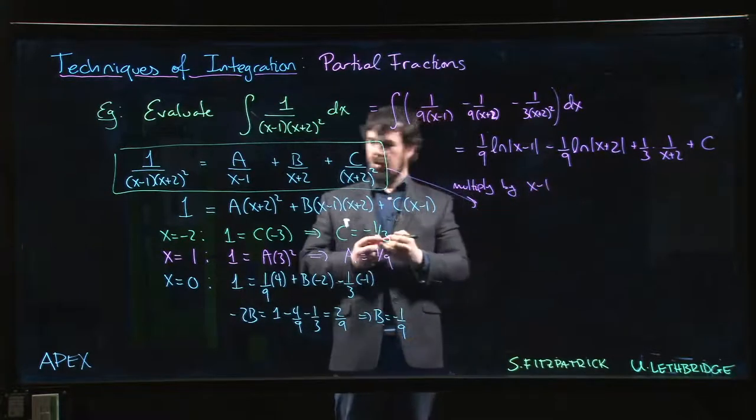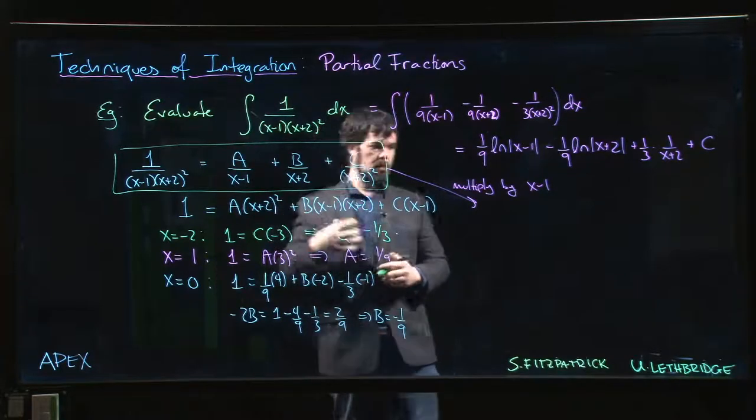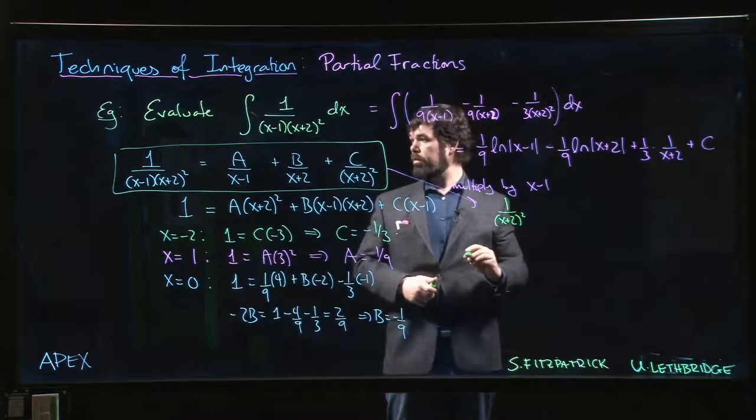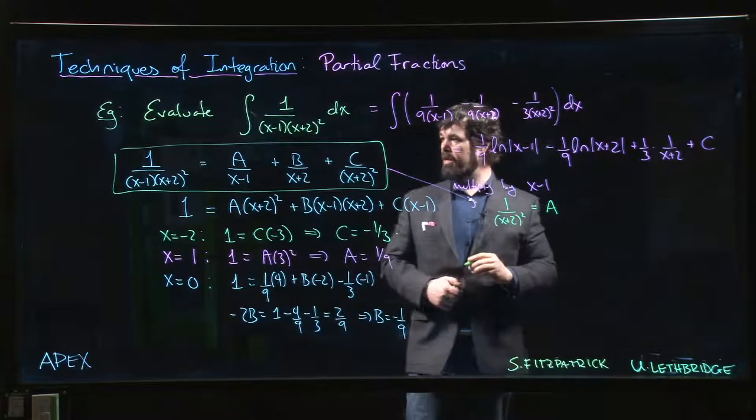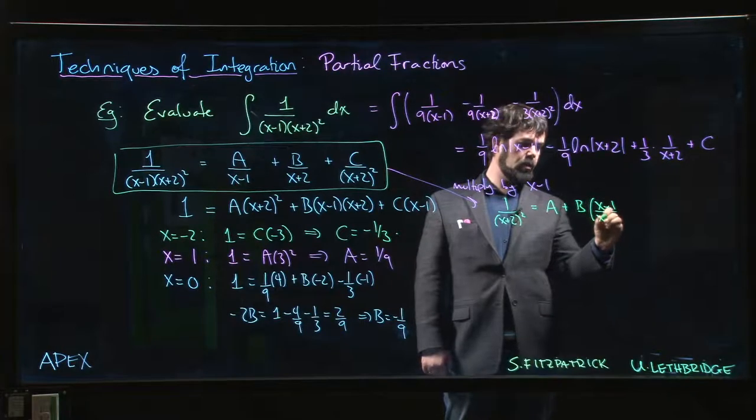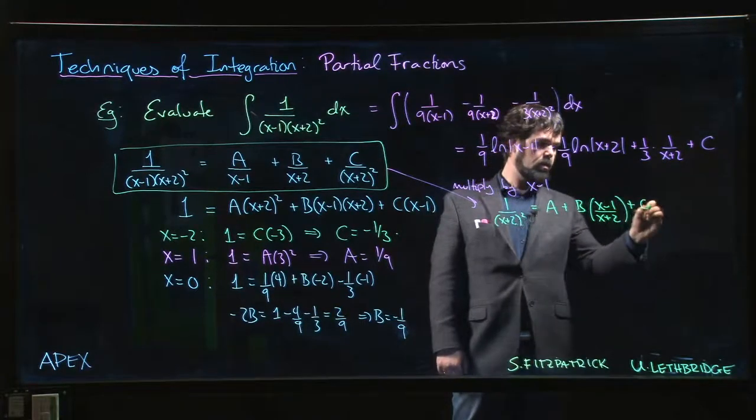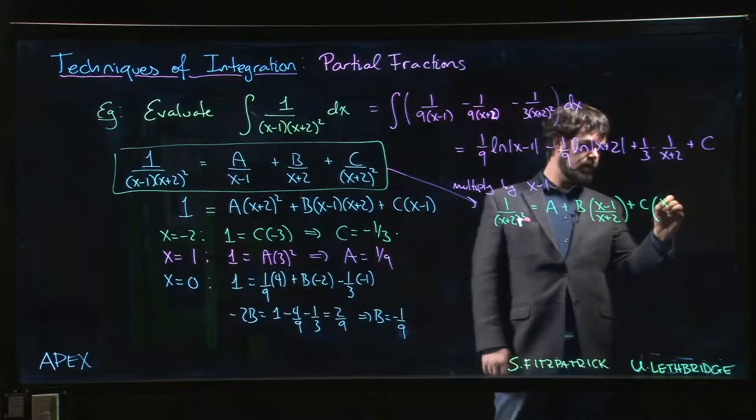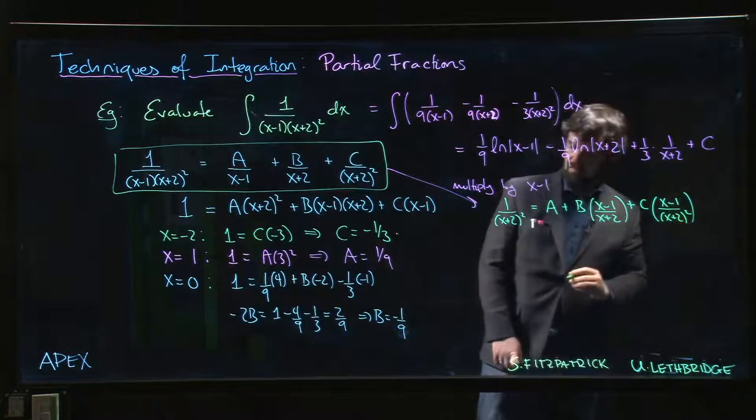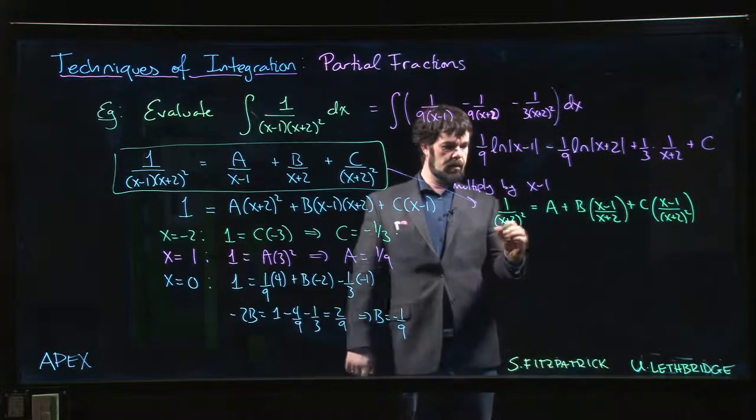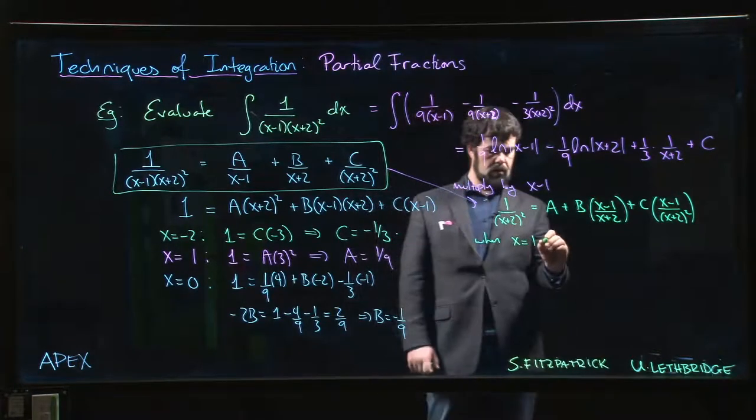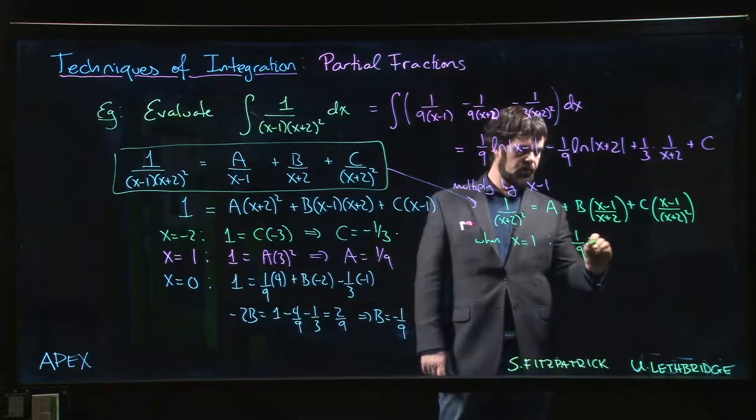So we multiply both sides by x minus 1. What we get is 1 over (x+2)^2 equals a plus b(x-1)/(x+2) plus c(x-1)/(x+2)^2. And if we put in x equals 1, we get 1/9 equals a plus 0 plus 0.